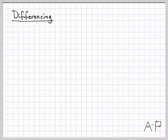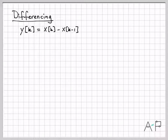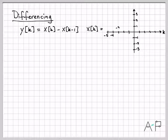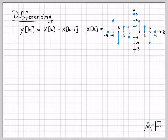Let's work through an example for each of these operations. For differencing, we take a signal at time k and subtract off the value of the signal at the previous time, time k minus 1, and store that in a new signal y of k. Here I've plotted x of k from time minus 5 to 4. Outside of this, we assume it's 0 — zero all the way from minus infinity up to time minus 5, and from time 4 onward it's also equal to 0.